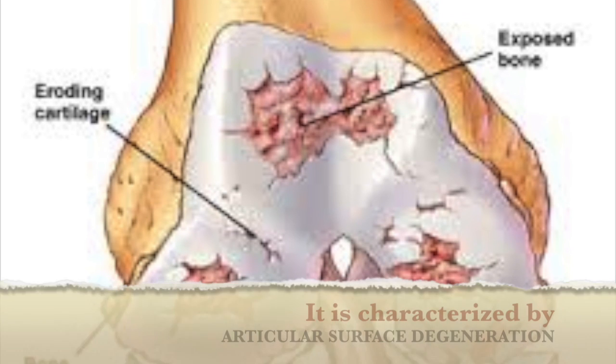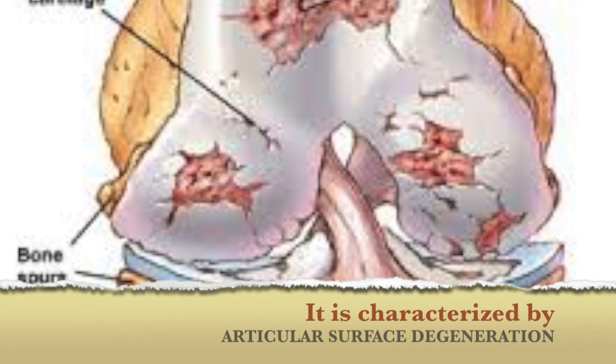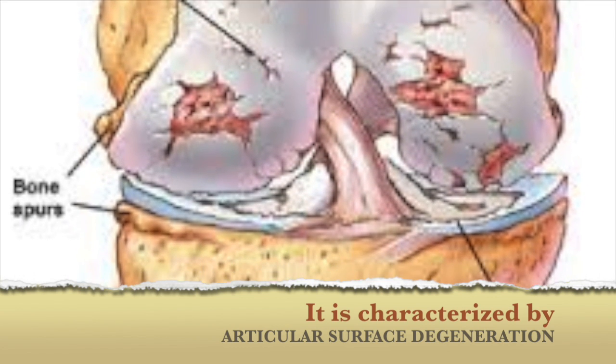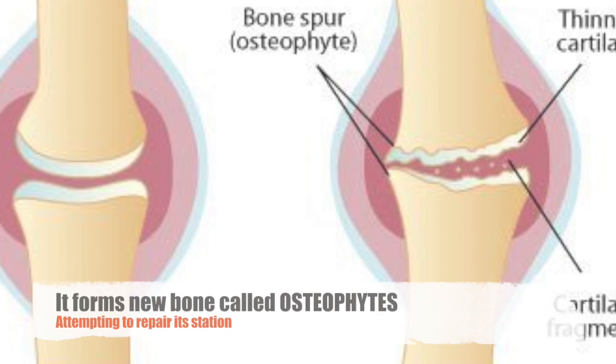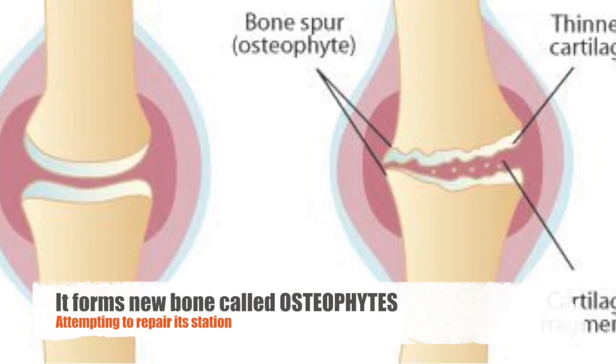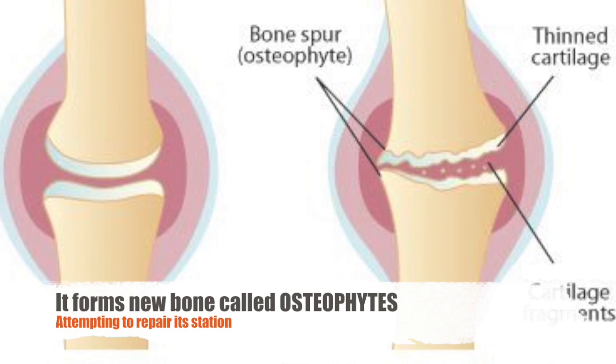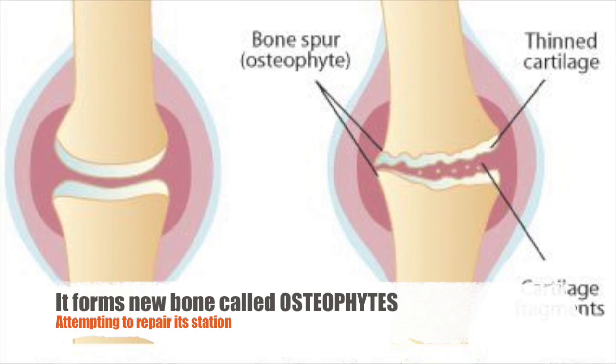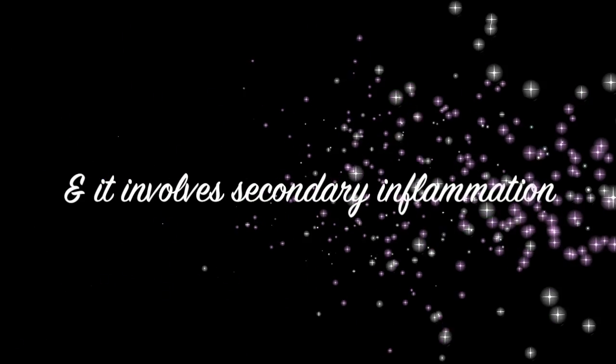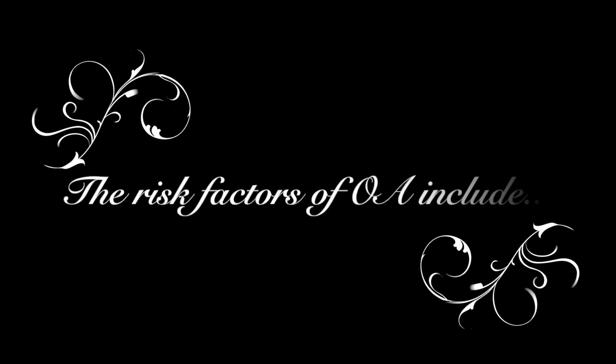Osteoarthritis is a disorder of synovial joints affecting our nation. It is characterized by articular surface degeneration. It forms new bone called osteophytes, attempting to repair its station, and it involves secondary inflammation.